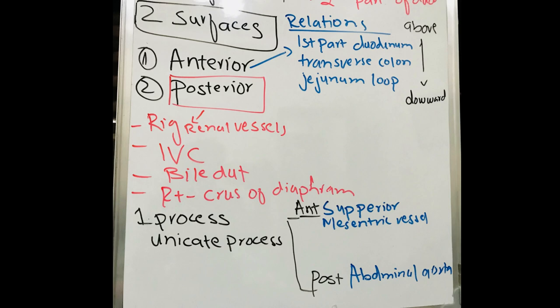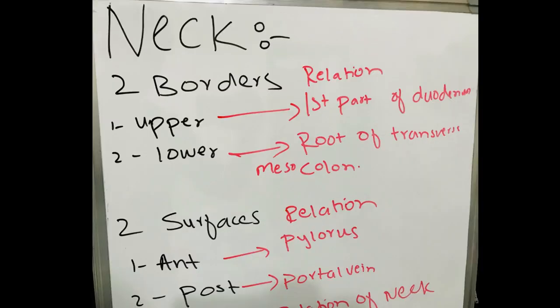The posterior surface of the head is related to the right renal vessels, inferior vena cava, bile duct, and the right crus of the diaphragm. There is also a process in the head called the uncinate process, which has two parts: the anterior part is related to the superior mesenteric vessels, while the posterior part is related to the abdominal aorta.